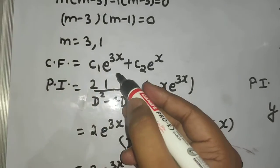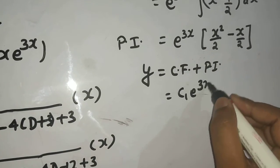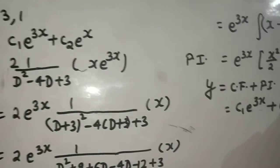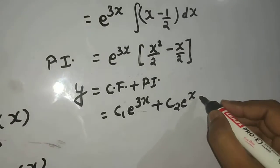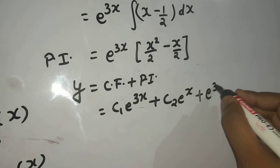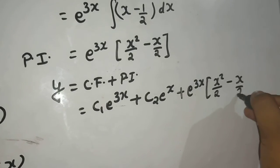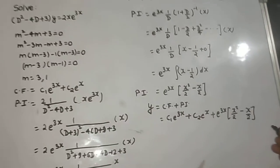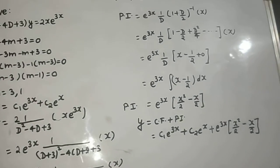Now I can write my final solution as CF plus PI. What was my CF? c1 e power 3x plus c2 e power x plus my PI, which is e power 3x, x square by 2 minus x by 2. This is my final answer. I hope you understood the problem. Thanks and have a nice day.